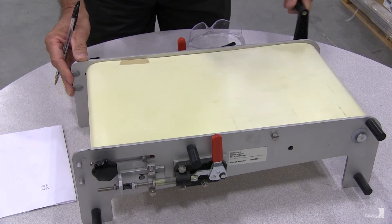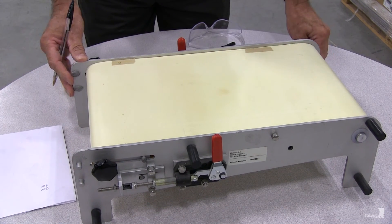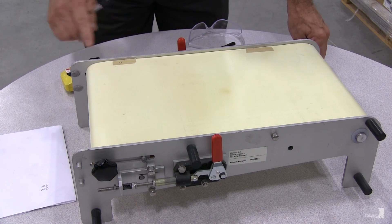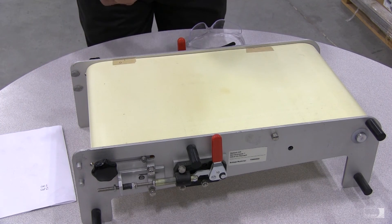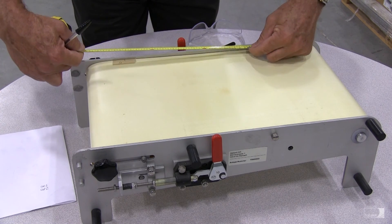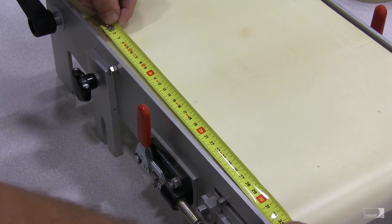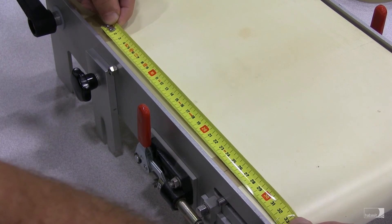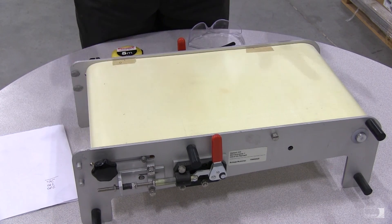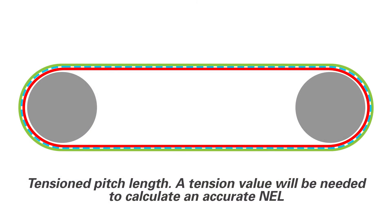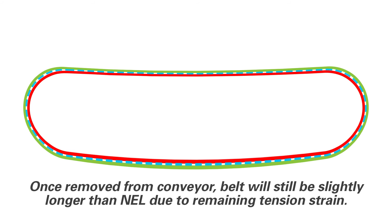Depending on the length of the conveyor, eventually when you rotate the conveyor, your original mark will reappear. And when this happens, simply measure the distance from your last measurement to the original measurement. Record that measurement. The sum of these measurements will be the pitch length. And if the belt is tensioned on the conveyor, this will be a tensioned pitch length. The actual NEL length will be slightly less than this value, depending on the amount of tension on the belt on the conveyor.